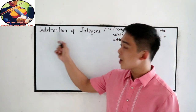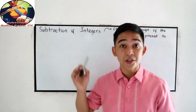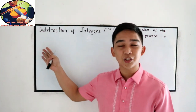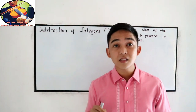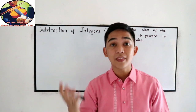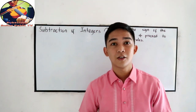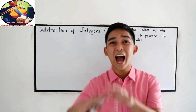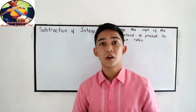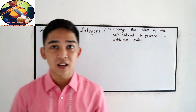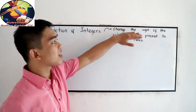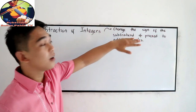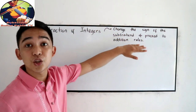Now let's have the subtraction of integers. In order for you to understand subtraction, you need to master our rules in addition of integers. I hope that you already mastered that rule, and of course how to add integers. Our rule in subtraction is: change the sign of the subtrahend and proceed to addition rules.